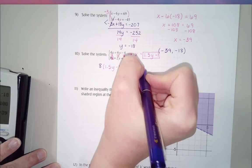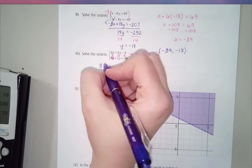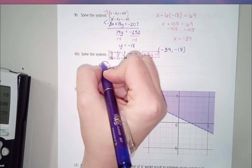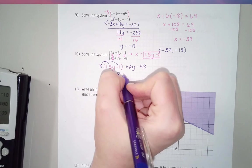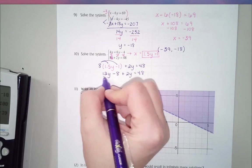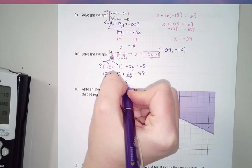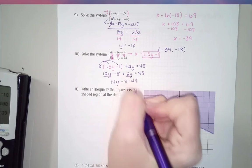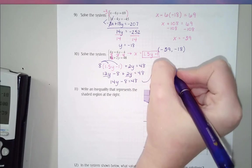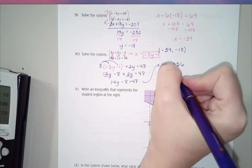When I rewrite that bottom equation, I end up with 8 times (1.5y minus 1) plus 2y equals 48. And the reason I like this is my whole equation now is involving y. I don't have any x's left to deal with. So 8 times 1.5 is 12, and 8 times negative 1 is negative 8 plus 2y equals 48.